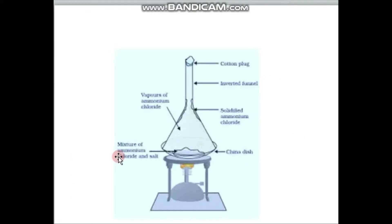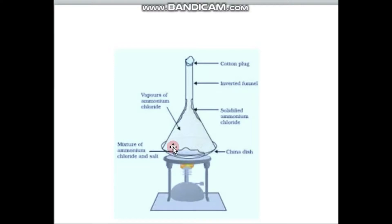A typical example is separating ammonium chloride and salt. The apparatus includes an evaporating dish, tripod stand, Bunsen burner, and an inverted funnel with cotton wool placed at its end. Upon heating the mixture, the ammonium chloride vapor rises up and is collected at the funnel, then later collected in a separate container.